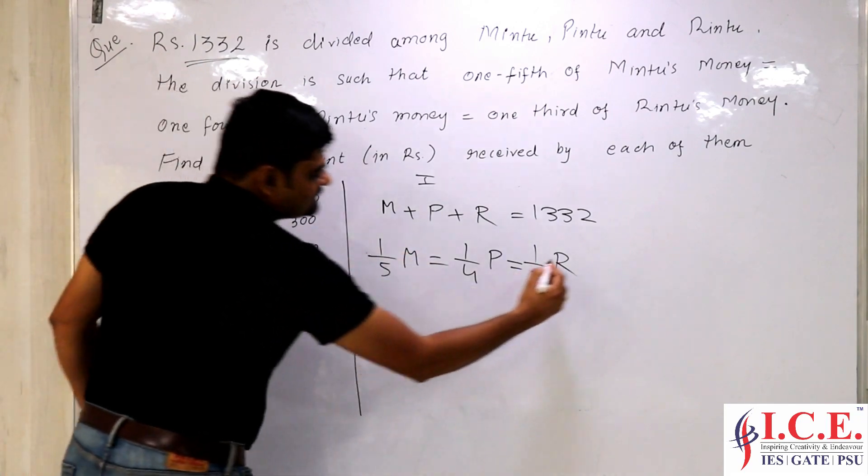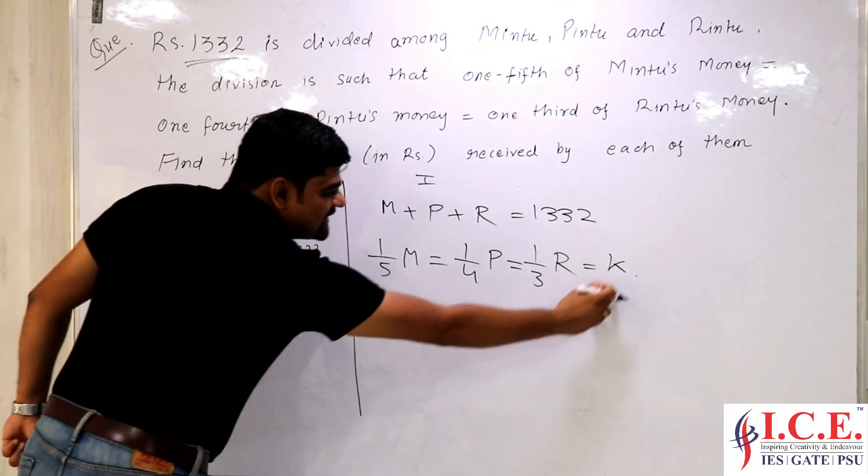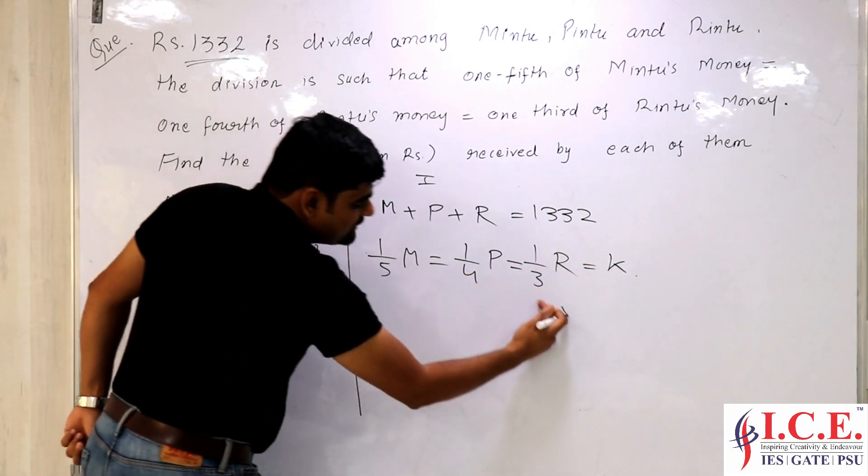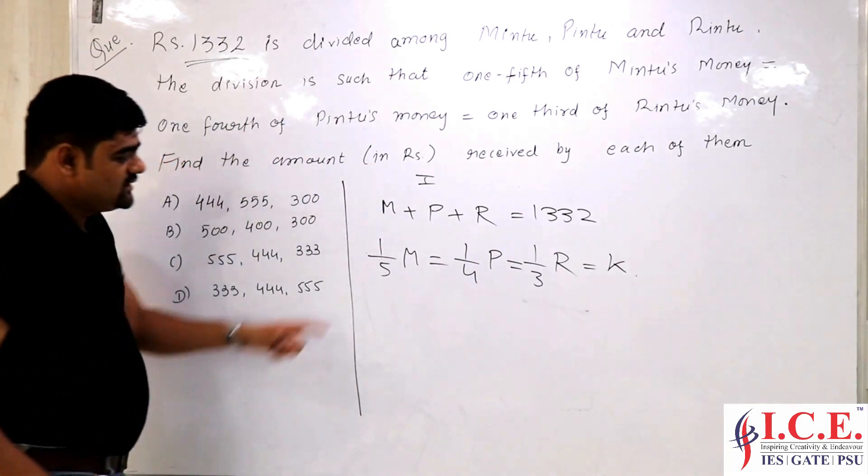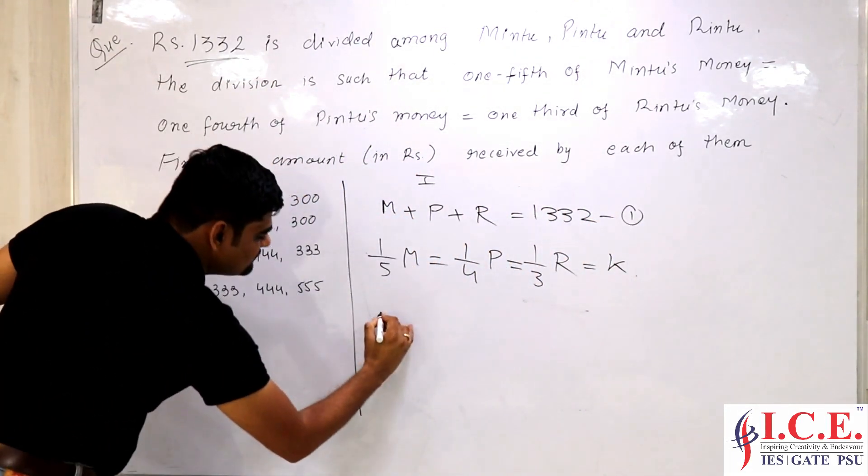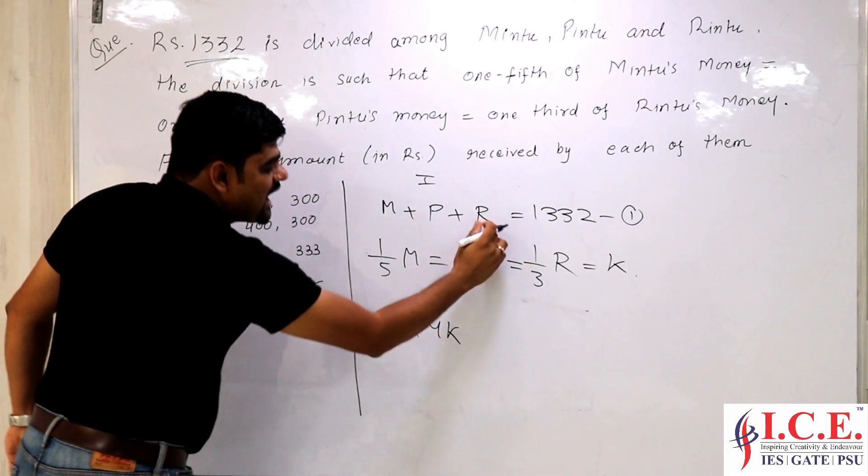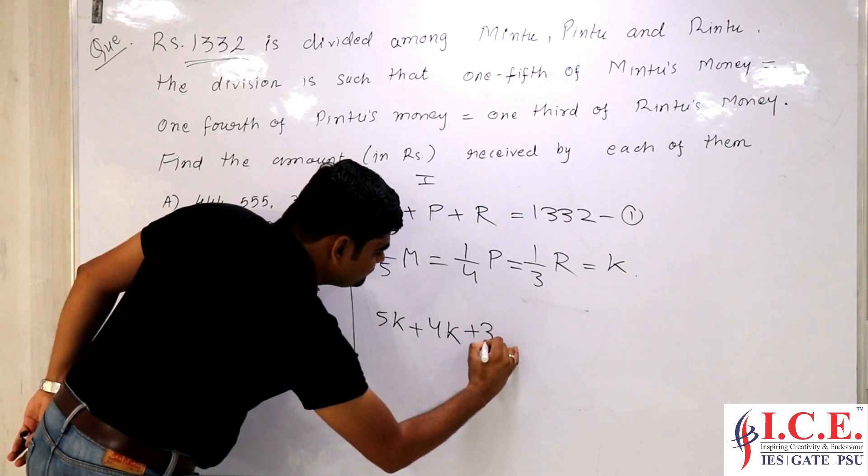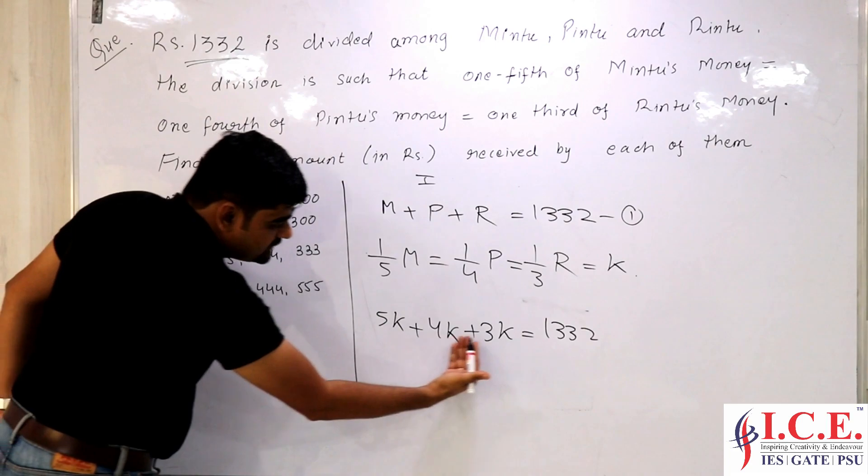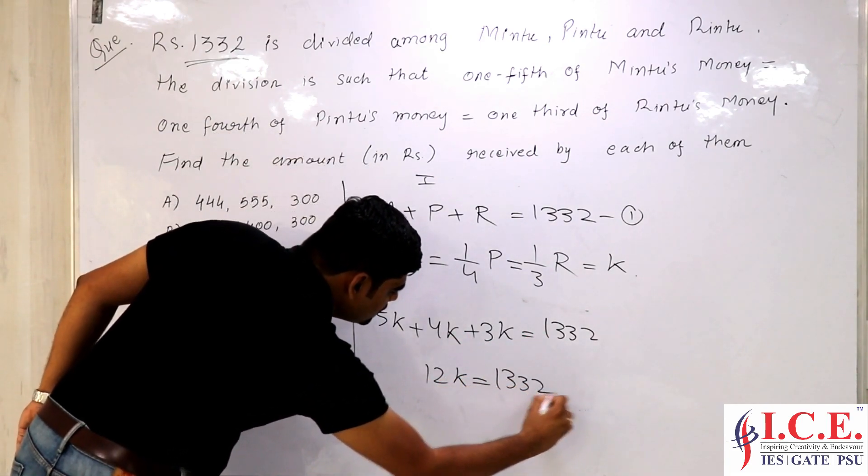So if I take this something equal to some K, can I say M will become 5K, P will become 4K, R will become 3K. So this is 1332, total 5 plus 4 is 9, 9 plus 3 is 12. 12K equals 1332.